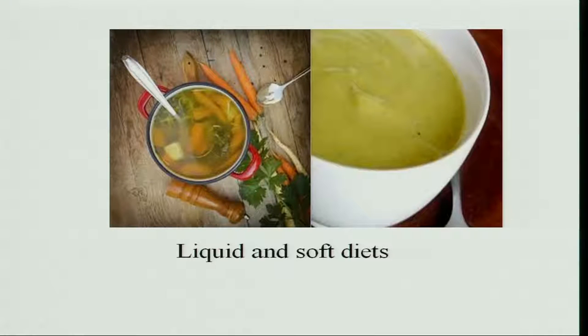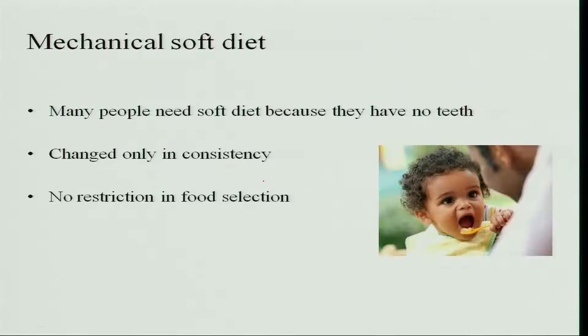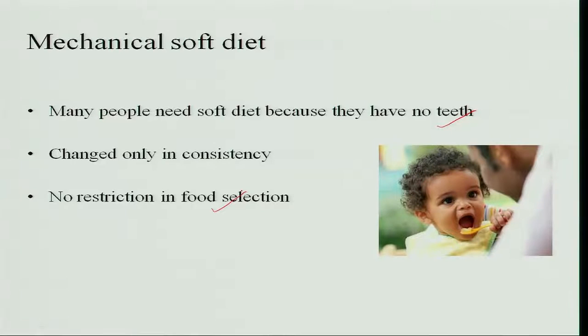These are the liquid and soft diets that can be given to sick persons. A mechanical soft diet is needed by people who have no teeth — infants and older people. Such people require only a change in consistency. The same food we eat, if softly cooked, can be fed to infants or the older age group, and there is no restriction for any food selection here.